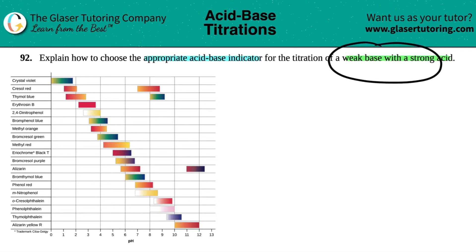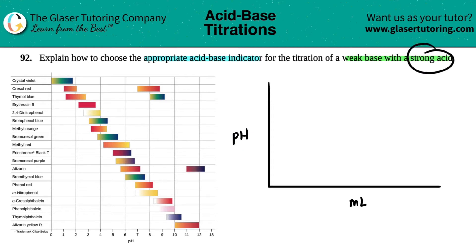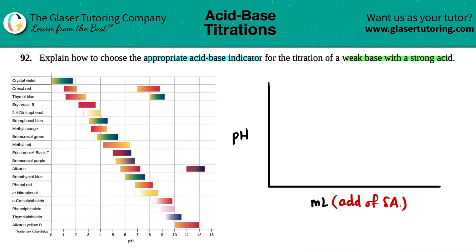To understand the weak base versus strong acid titration, let's draw a graph. The y-axis is pH and the x-axis is milliliters — specifically how much strong acid you're adding. As we go along, we're adding more and more strong acid to the mix.